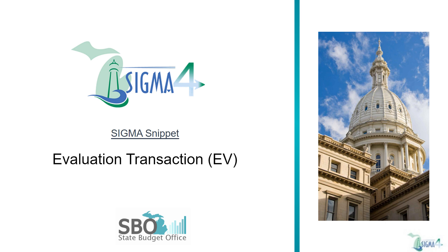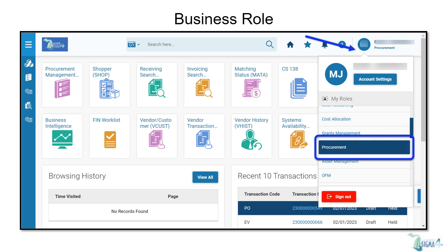The EV is used in Sigma to evaluate solicitation responses based on the information populated in the solicitation. Once you're logged into Sigma 4, select the Procurement Business role. This business role will provide a tailored homepage fit with quick links, widgets, and navigational options that all align with the work common to a procurement professional.